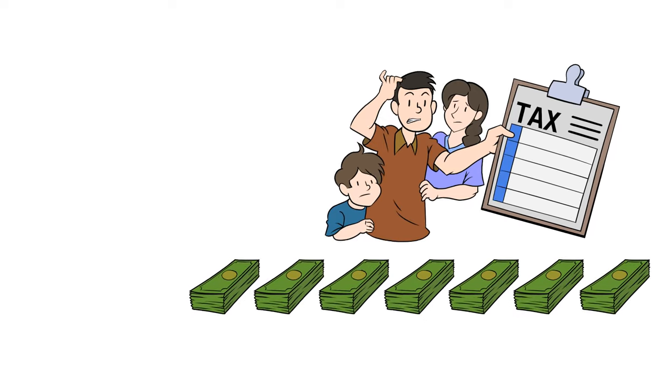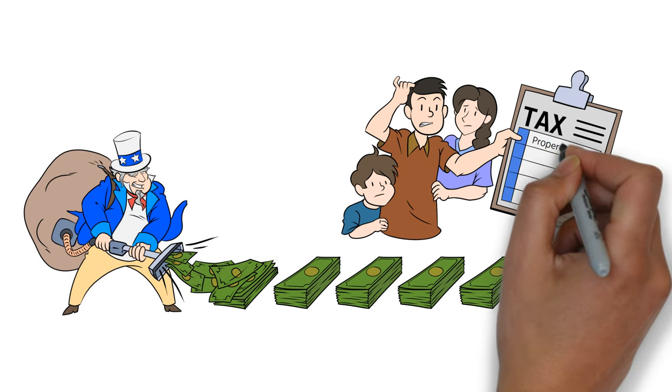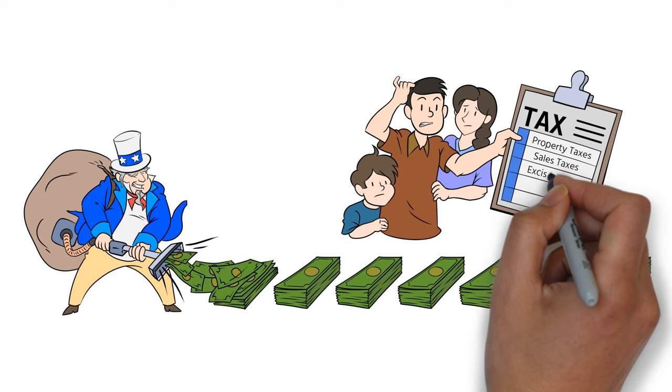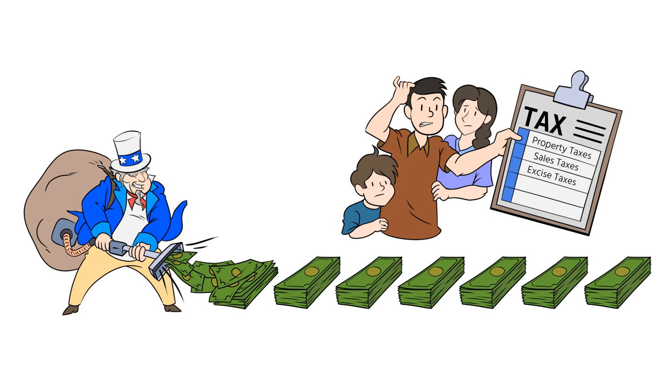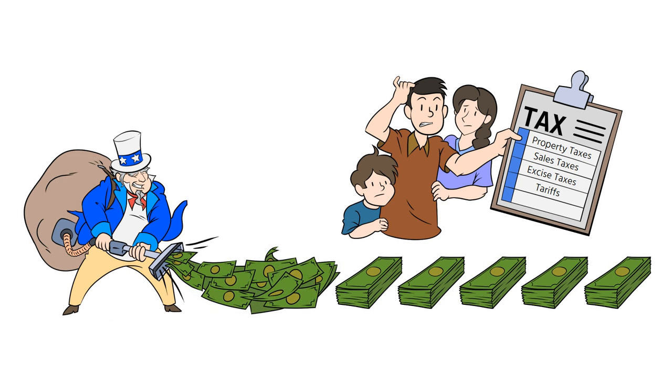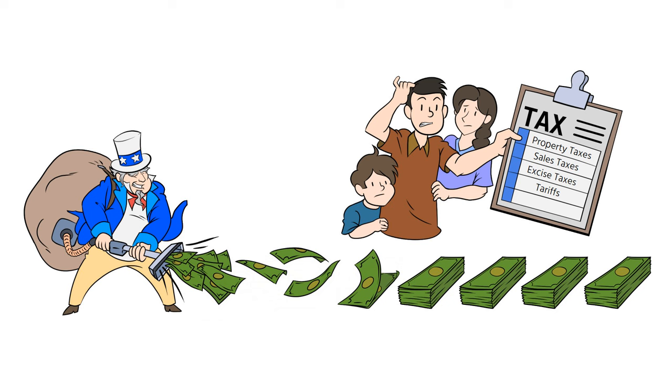But this is only the tip of the taxation iceberg. When accounting for property taxes, sales taxes, and other embedded taxes, which are various regulatory costs, such as business taxes and tariffs that are embedded directly into the prices of goods, the total tax burden for a family earning $70,000 will be around $30,000 each year.